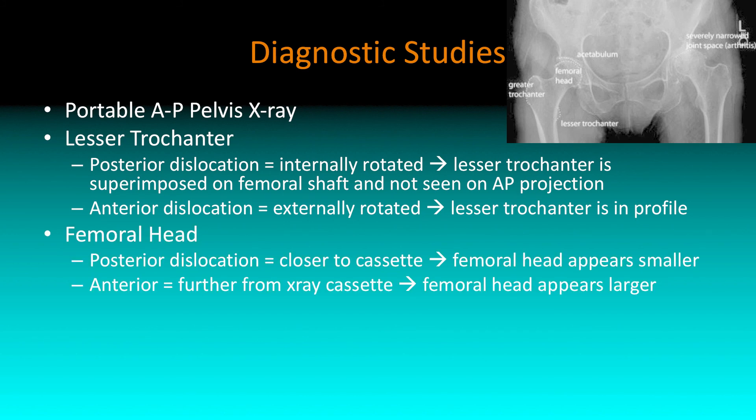Another thing you can look at is the femoral head itself. In a posterior dislocation it's going to be closer to the cassette, so on the AP film it's going to look a little smaller. Whereas in an anterior dislocation it's going to be further away, so the femoral head may appear a little larger — just based on how they shoot the x-ray.